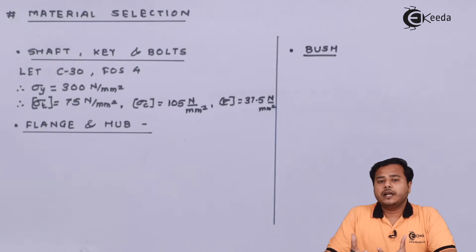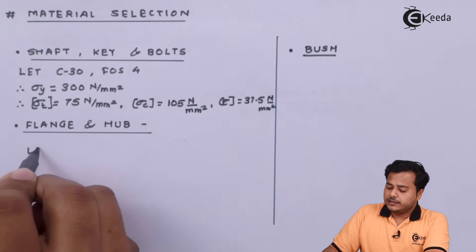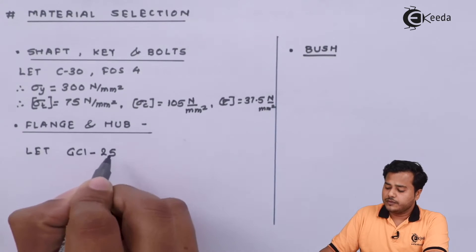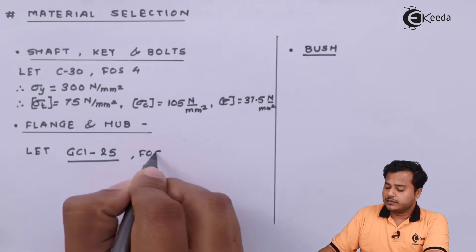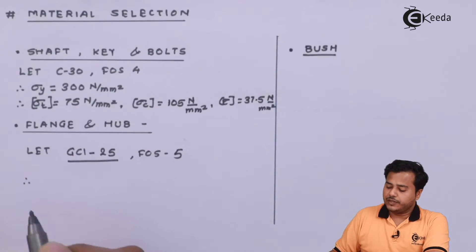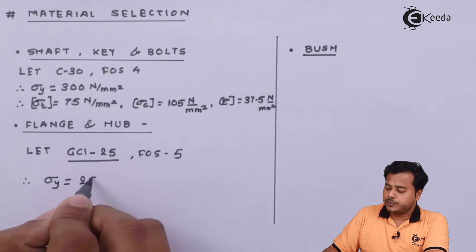Next thing is flange and hub. So generally we select hubs and flanges which are made up of the castings. Let GCI be the material GCI 25 be the material with FOS again a standard selection 5. And therefore, the value directly we get sigma y is somewhere equal to 250 Newton per millimeter square.